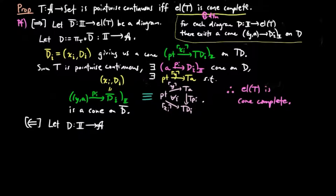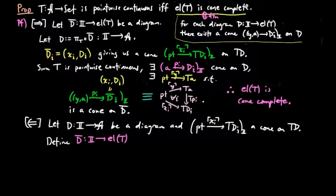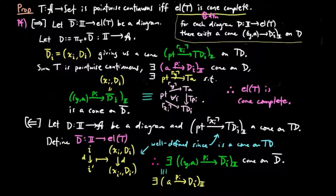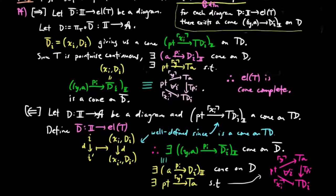Conversely, let D be a diagram and x_i a cone of elements on T(D). Define D-bar from i to the category of elements of T, which takes an arrow D from i to i' to the morphism D(D) in the category of elements of T from x_i(d_i) to x_i'(d_i'). This is well-defined since x_i is a cone on T(D). But the category of elements of T is cone-complete. Therefore, there exists a cone pi on D-bar. But this is equivalent to giving a cone pi on D and an element y of T(A) such that T(pi)(y) equals x_i for each i. And thus, we see that T is pointwise continuous.